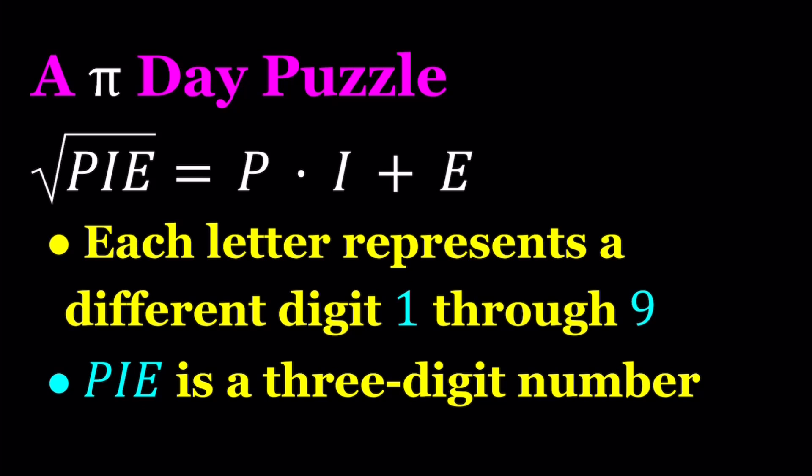So we have a three-digit number, PIE, and its square root can be written as P times I plus E, where P, I, and E represent a different digit 1 through 9.